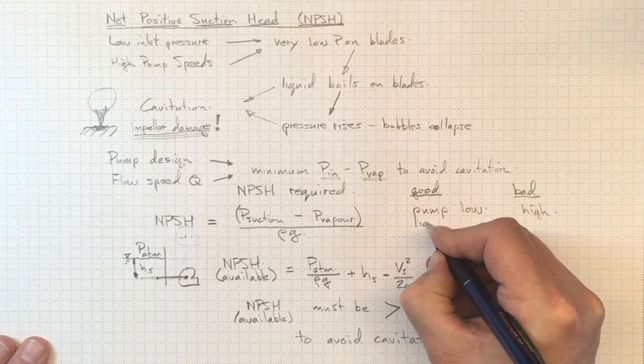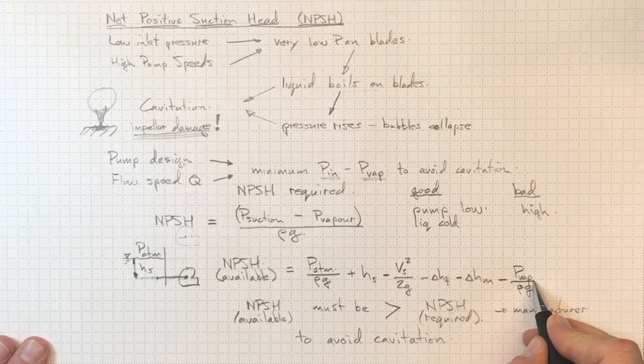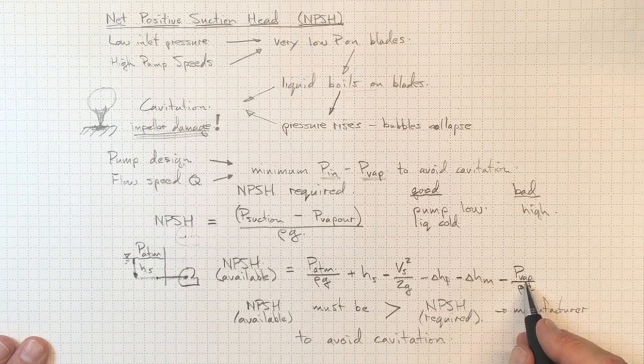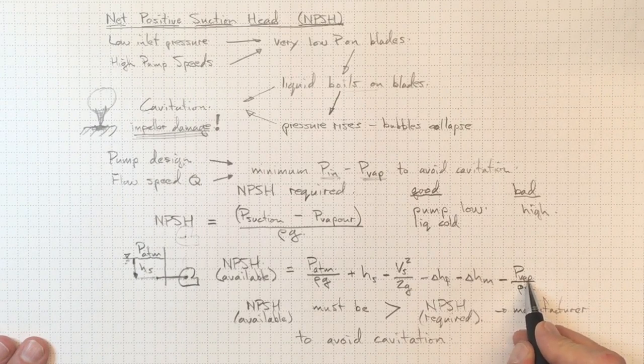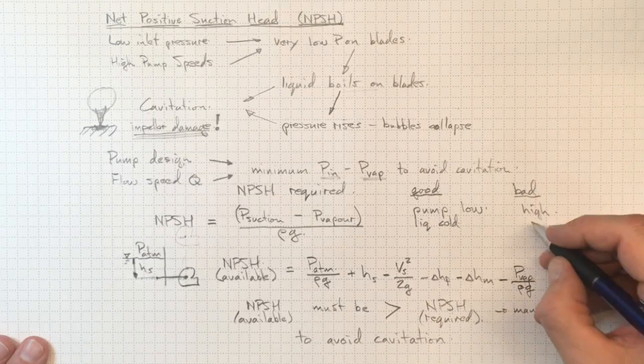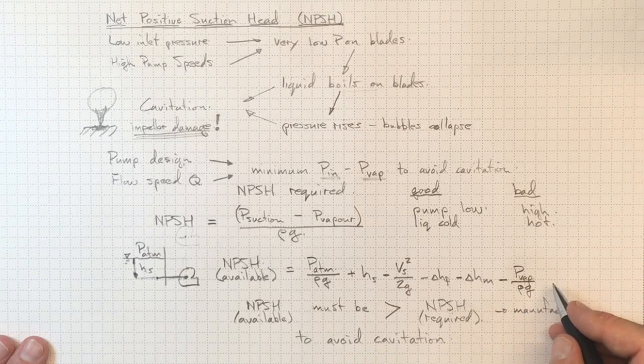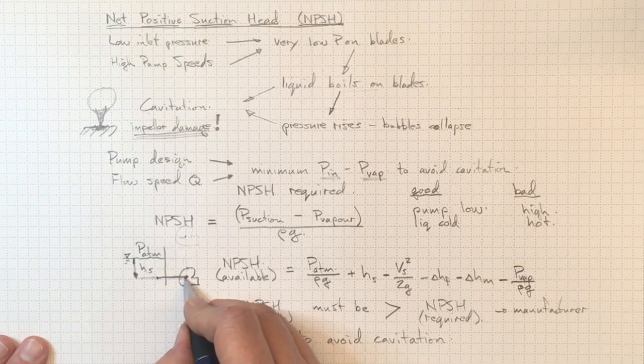Good. If the liquid is cold, then the vapor pressure will be lower and we'll have more NPSH available. So cold fluids, always put your pump on the cold side of the circuit. If there's a heater in the circuit, always make sure you put your pump on the cold side of the heater. On the other hand, if the fluid is hot, that's going to make it more difficult to design your pumping system to avoid cavitation.